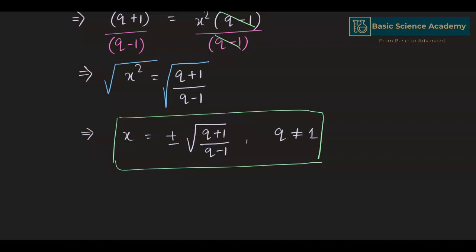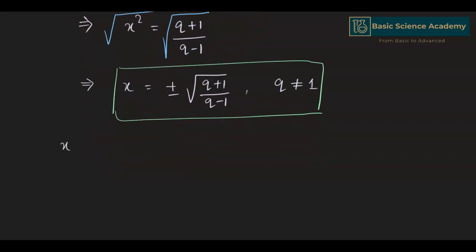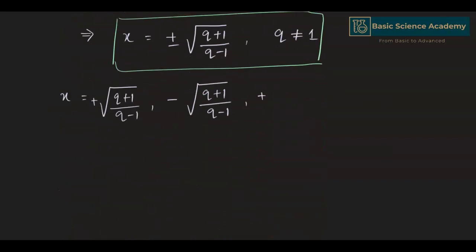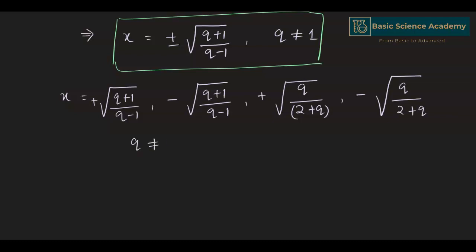Hence there is a total of four solutions: x equals plus or minus square root of (q+1)/(q-1), and x equals plus or minus square root of q/(2+q), where q is not equals to 1 and q is not equals to minus 2. These are our answers.